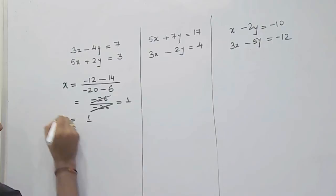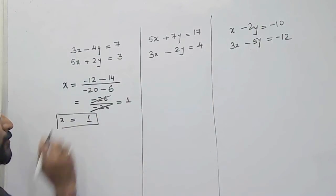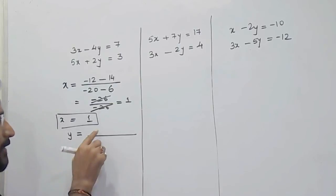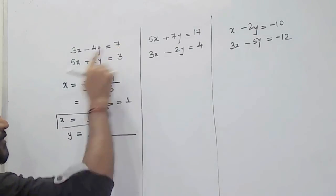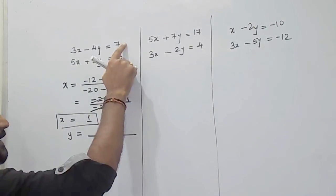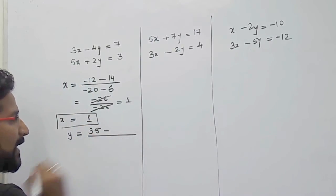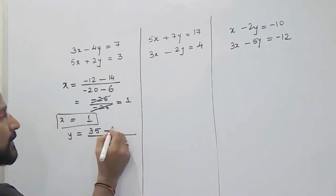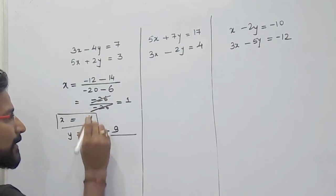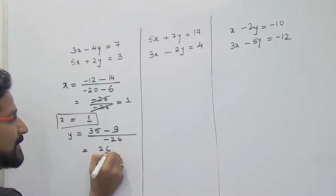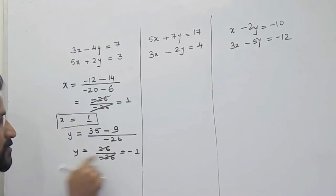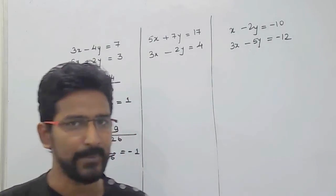So the answer is x equals 1. Now to get the value of y: the numerator is 7 into 5, which is 35, minus 3 into 3, which is 9 — giving 26. The denominator remains the same, which is minus 26. So 26 divided by minus 26 equals minus 1. Therefore y equals minus 1 and x equals 1 — that is the solution of this simultaneous equation.